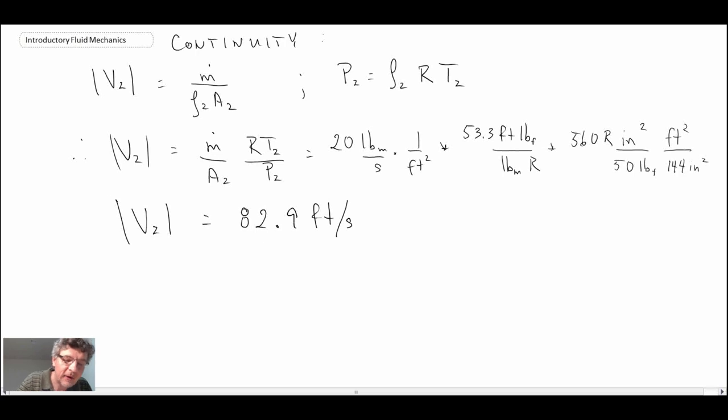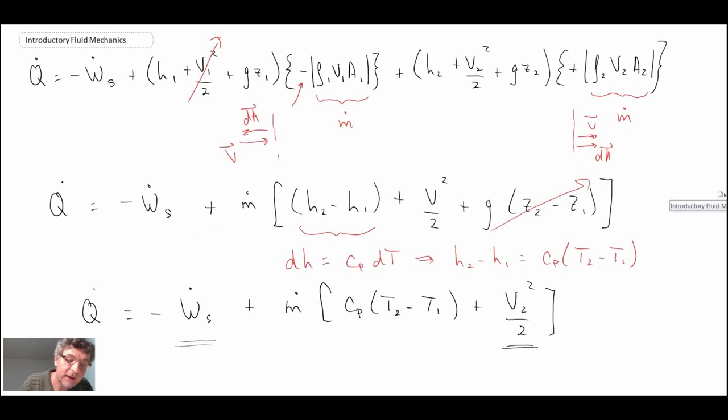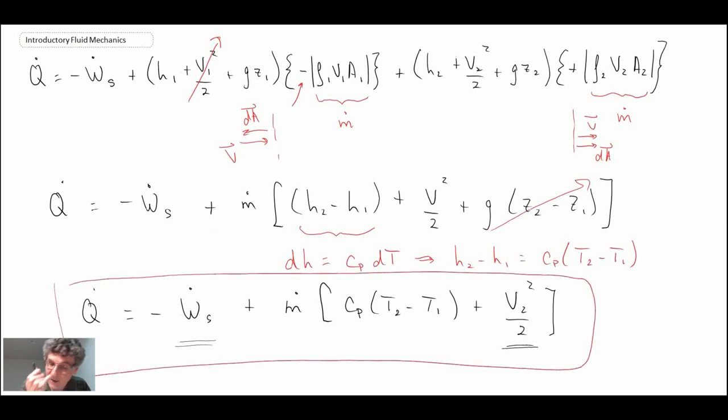Now that we know that, what we can do is go back to our first law. Let's look at it here. So this was the formulation. We know velocity, and we have pretty much everything else. We know the mass flow rate. C sub P, we can look that up for air. We know the temperature change. We know the work. We can calculate everything. Again, the biggest challenge is going to be dealing with the units. So let's go through and see what we get.